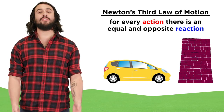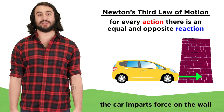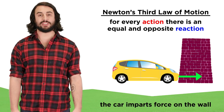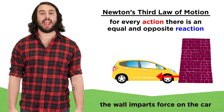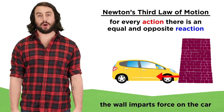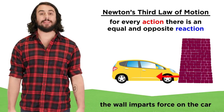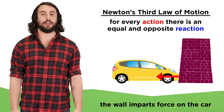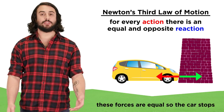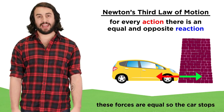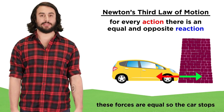Think of a car hitting a brick wall. The car imparts an action force on the wall from its motion, and the wall imparts a reaction force right back on the car, bringing it to a quick stop. These vectors are equal in length and point in opposite directions.